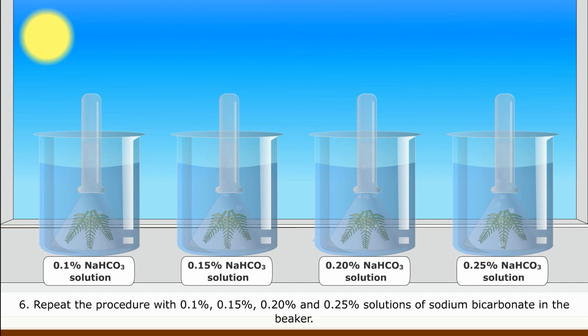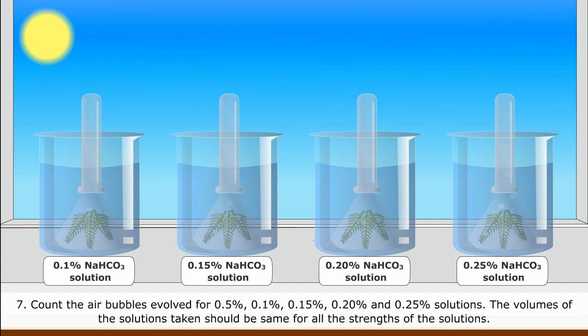Count the air bubbles evolved for 0.5%, 0.1%, 0.15%, 0.20%, and 0.25% solutions. The volumes of the solutions taken should be same for all the strengths of the solutions.